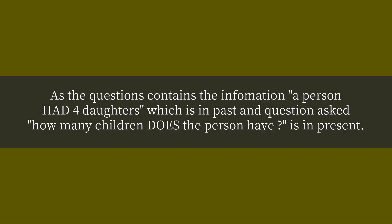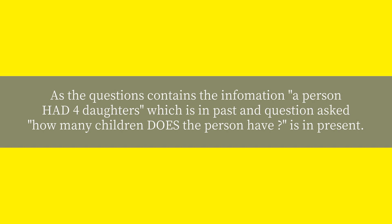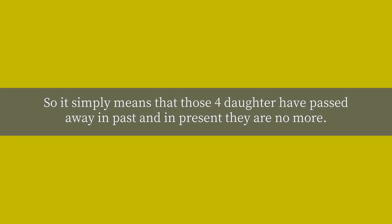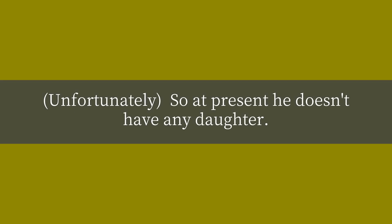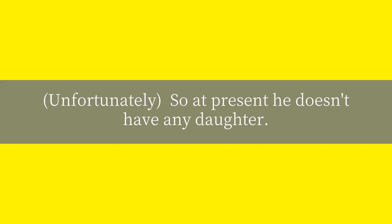The question contains the information 'a person had four daughters,' which is in past tense, and the question asks 'how many children does the person have,' which is in present tense. So it simply means that those four daughters have passed away in the past, and in the present they are no more. Unfortunately, so at present, he doesn't have any daughter.